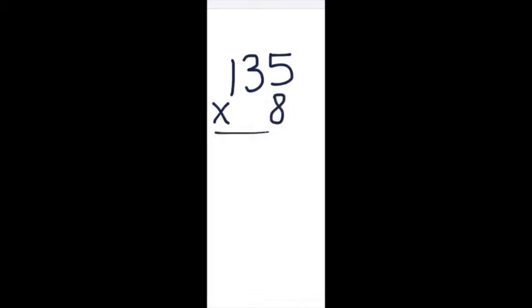First, we will multiply the 5 in the ones place by 8, which gives us 40. Then, we will move to the tens place. We will multiply 30 by 8, which is 240.